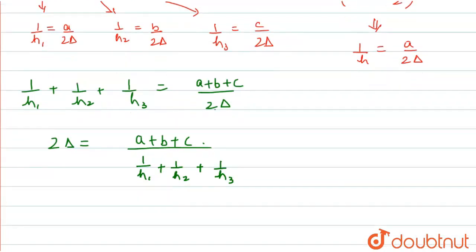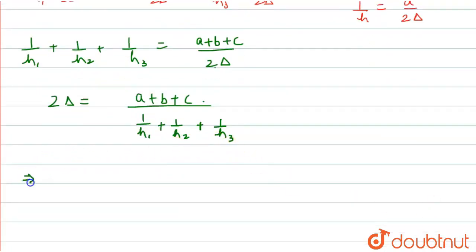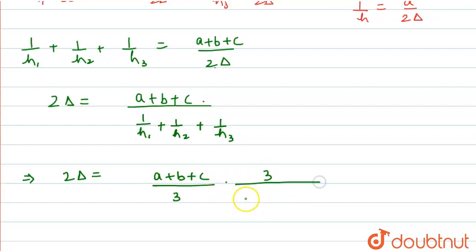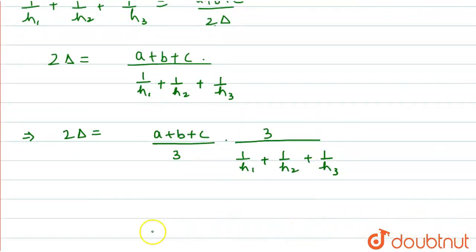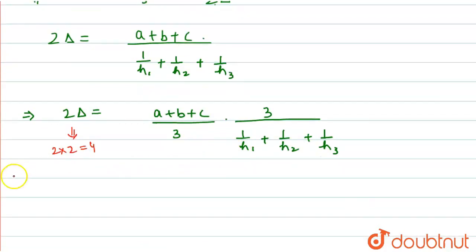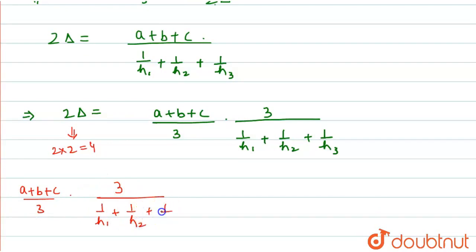Now, multiplying and dividing by 3, we get: 2Δ = [(a + b + c)/3] / [(1/h1 + 1/h2 + 1/h3)/3]. The area of the triangle is given as 2, so 2 × 2 = 4. Therefore, we can write: [(a + b + c)/3] × [3 / (1/h1 + 1/h2 + 1/h3)] = 4.